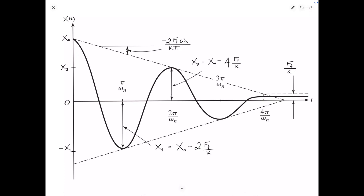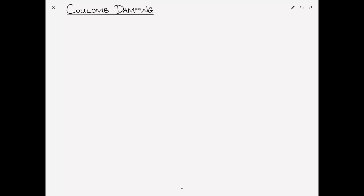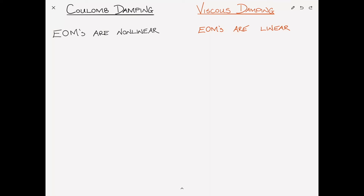I'd like to summarize the differences between Coulomb and viscous damping. In Coulomb damping, the equations of motion are non-linear — this is because the frictional force flips signs — while in viscous damping the equations are linear. In Coulomb damping the amplitudes reduce linearly, while in viscous damping they reduce exponentially.